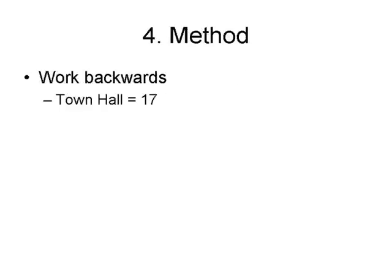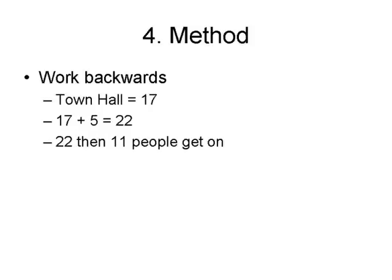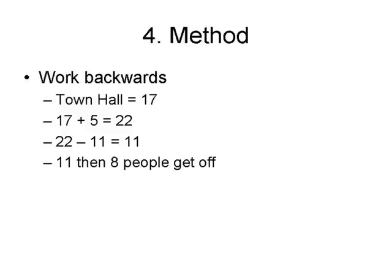We go to the end point. The most obvious piece of information is at Town Hall, there are 17 people. I know at the preceding stop that five people get off. Remember, we're working backwards — the operator must be reversed. When we're getting off, that's a negative, so because I'm working backwards, I must make it a positive. So 17 plus five equals 22. Then just before that, 11 people get on. Getting on is a positive, so I have to do the opposite. So 22 minus 11 is 11.